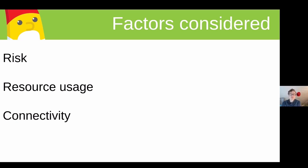Most IoT devices are connected in different ways, so you have different bandwidth restrictions depending on which wireless technology you use. Your device might not have the capacity to retrieve firmware updates in one big download, so you might need to spread it out. As for tooling for building a continuous deployment pipeline, there's nothing tailored to embedded, but we might be able to reuse some of the existing open source tooling to avoid reinventing the whole thing.